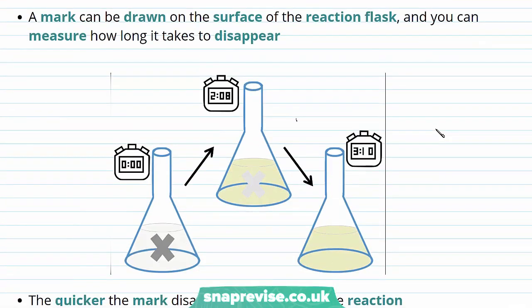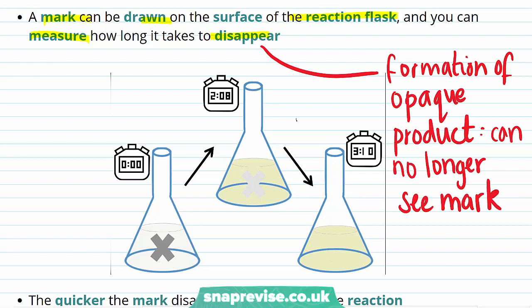If a reaction produces a precipitate, a mark can be drawn on the surface of the flask, and you can measure how long it takes for this mark to disappear. The mark will disappear as the formation of an opaque product occurs.